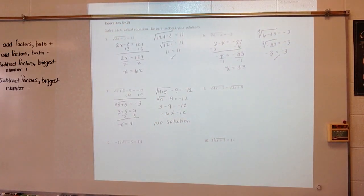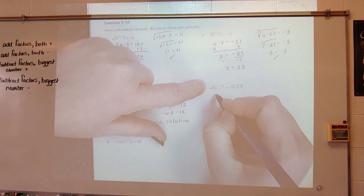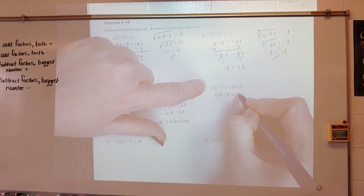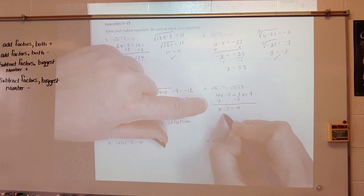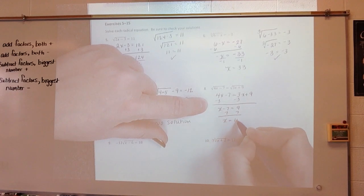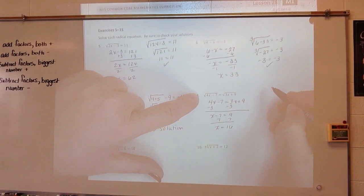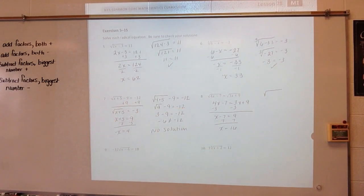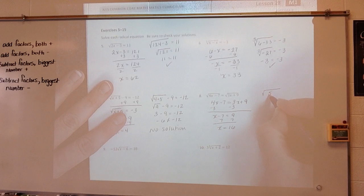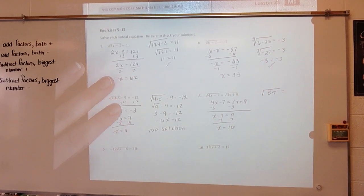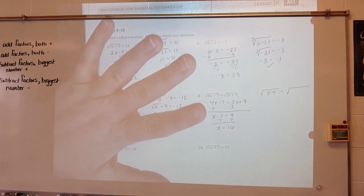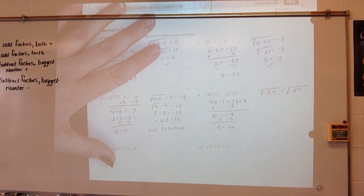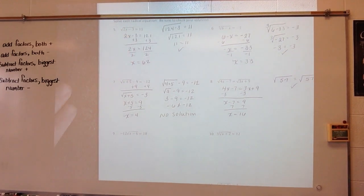I have radicals on both sides — how do I get rid of those radicals? Square both sides. When I square, I get 4x minus 7 equals 3x plus 9. Now I solve it like any other equation: add 7 to both sides, x equals 16. Plugging back in: 4 times 16 is 64, minus 7 is 57. 3 times 16 is 48, plus 9 is also the square root of 57. It's the same, so it does work.